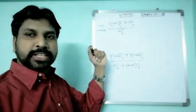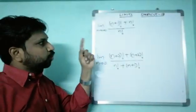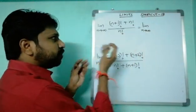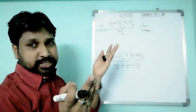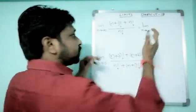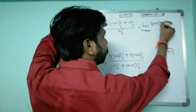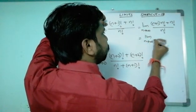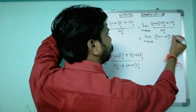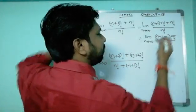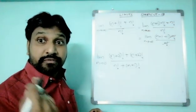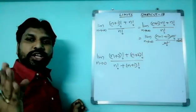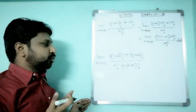Next example: limit n tends to infinity of [(n+1)! + n!] / n!. The least value is n!, so convert (n+1)! = (n+1) × n!. The expression becomes [(n+1) × n! + n!] / n! = n! × (n+1+1) / n! = n+2. As n tends to infinity, n+2 tends to infinity. So the answer is infinity.